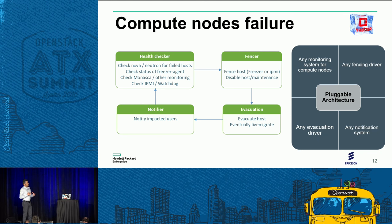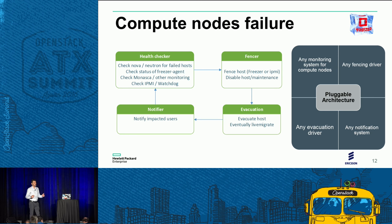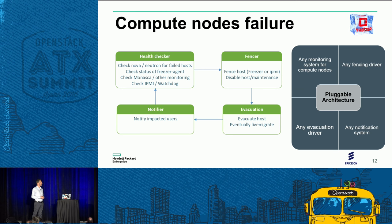Once a failure is detected, the first mandatory step is to fence the node — kill it definitively and make sure it will not come back online again, because that would cause very bad issues like double-mounting volumes and driving the operating system crazy. Possibly we even disable the node, putting it into maintenance mode so Nova will not try to use it.